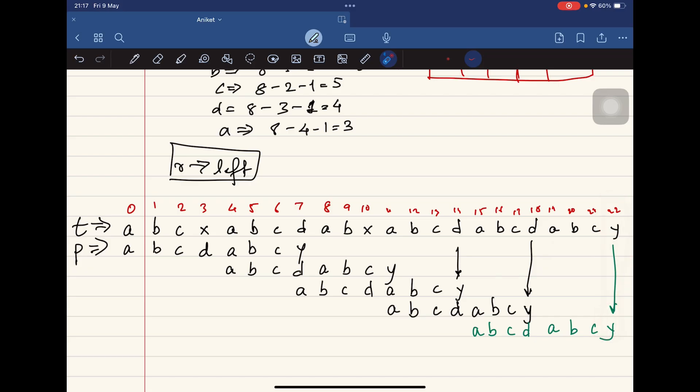Once it matches, we move one step back. We check whether there is a mismatch or match, it matches again. Come back, it matches. This also matches. This also matches. This matches, this matches, and this. So now we have successfully found the pattern in that particular string.